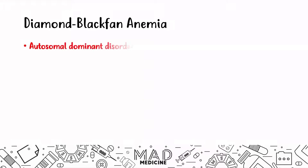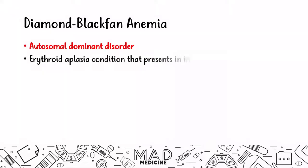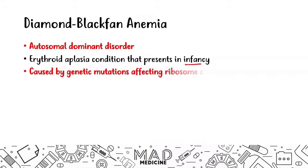Diamond Blackfan anemia is an autosomal dominant disorder. Remember, we talked about orotic aciduria in our previous video — that was an autosomal recessive disorder. Diamond Blackfan is an autosomal dominant disorder in which you have erythroid aplasia that presents in infancy. Most people with Diamond Blackfan anemia (DBA) are going to present as an infant, and that's the classical presentation you'll see on Step 1. This autosomal dominant erythroid aplasia can be caused by genetic mutations that affect ribosome synthesis — this doesn't have anything to do with DNA synthesis.